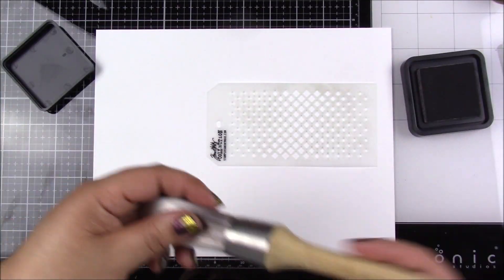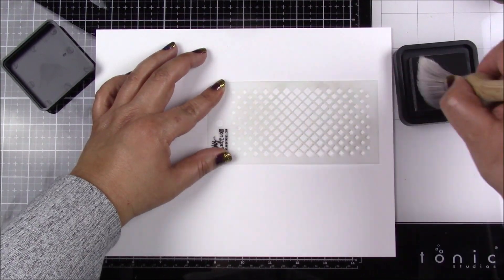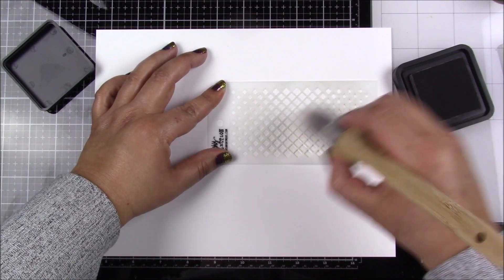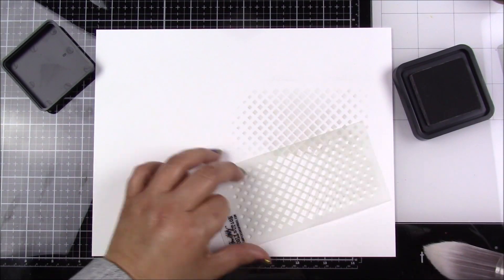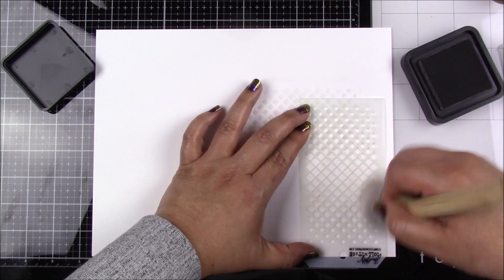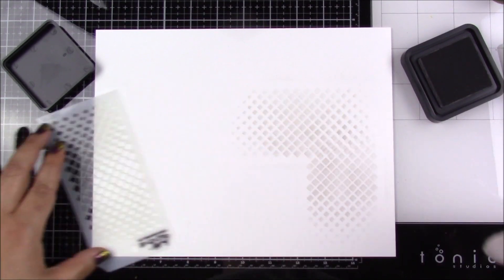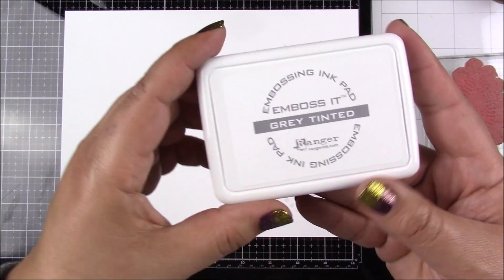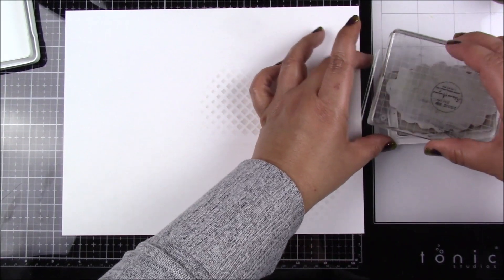The first step is to create the background panel. For that I'll use this square gradient mini stencil from Tim Holtz with pumice stone distress ink. I'm not quite sure exactly what will get into my final background panel. I work in a large area and then after I'm finished I look to see what area I like the best, and that's what I will end up trimming.